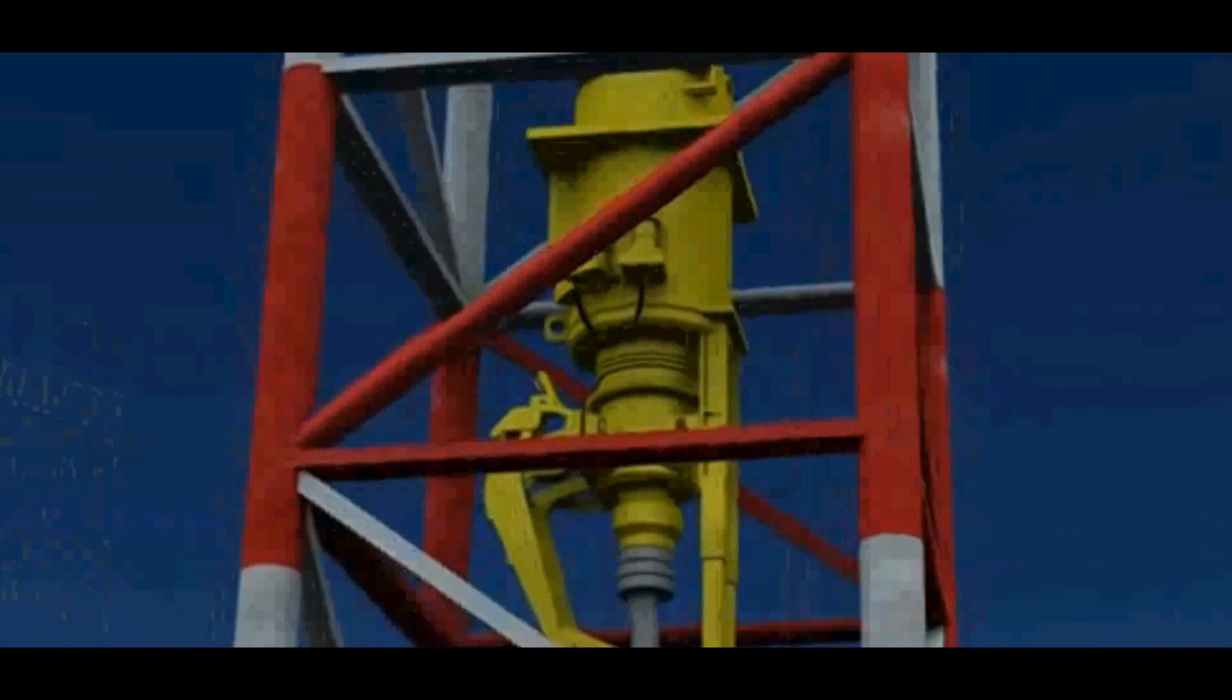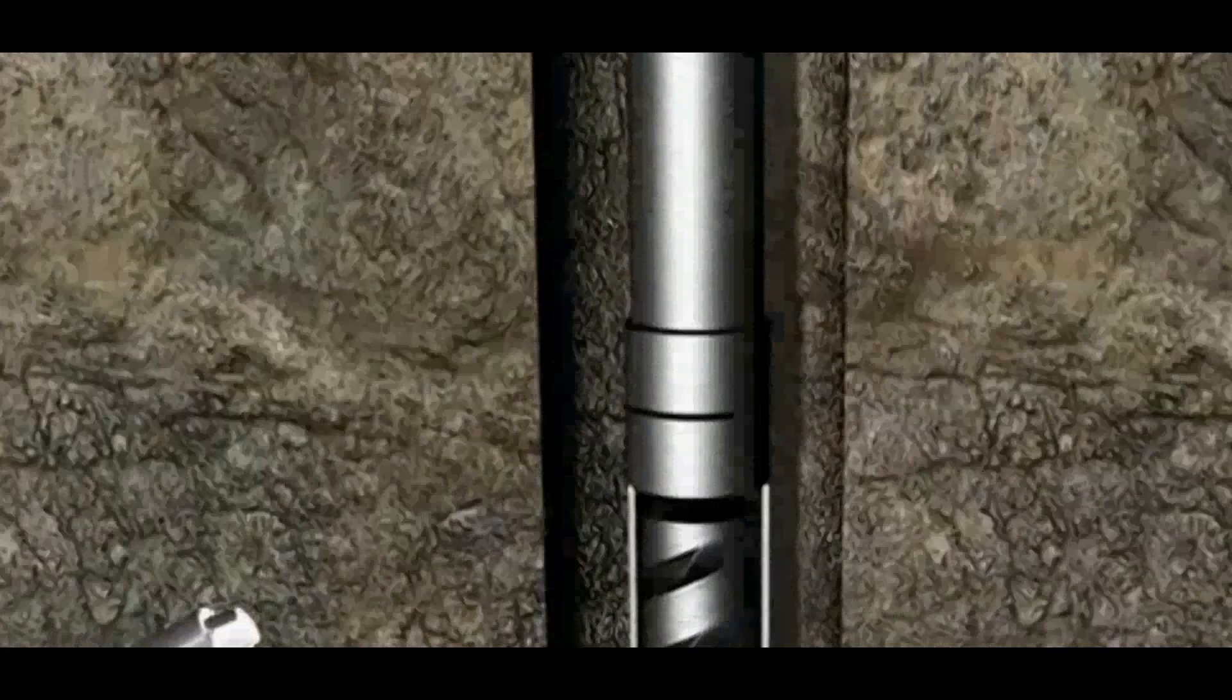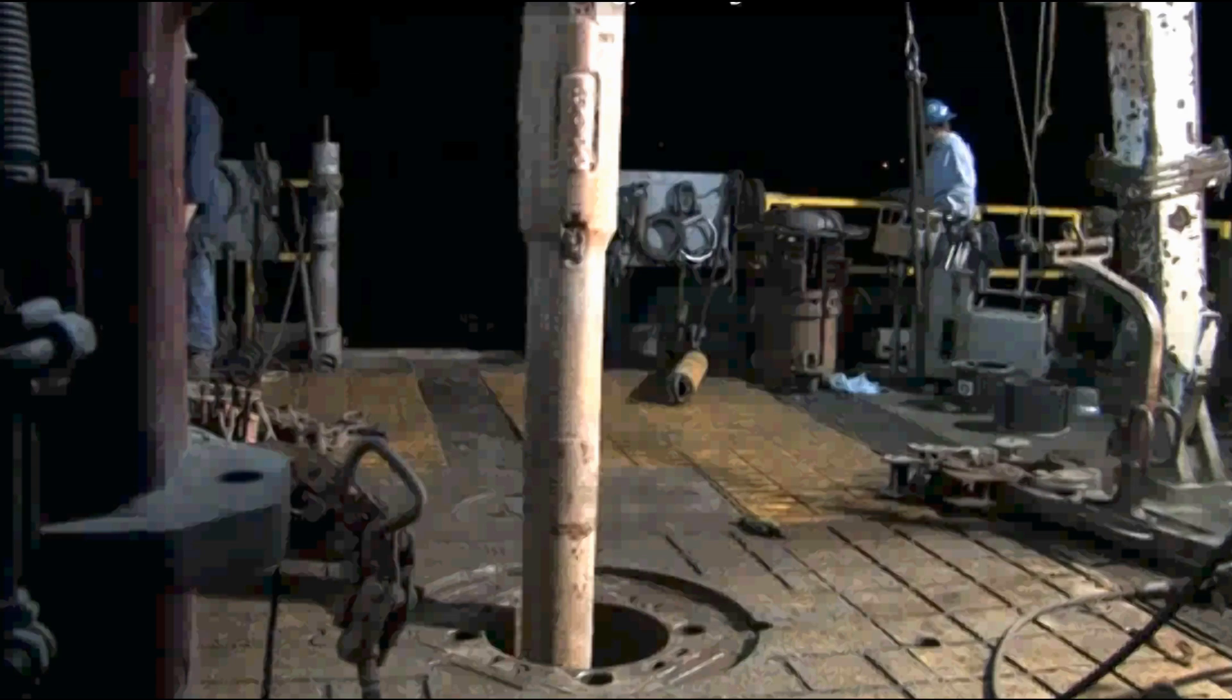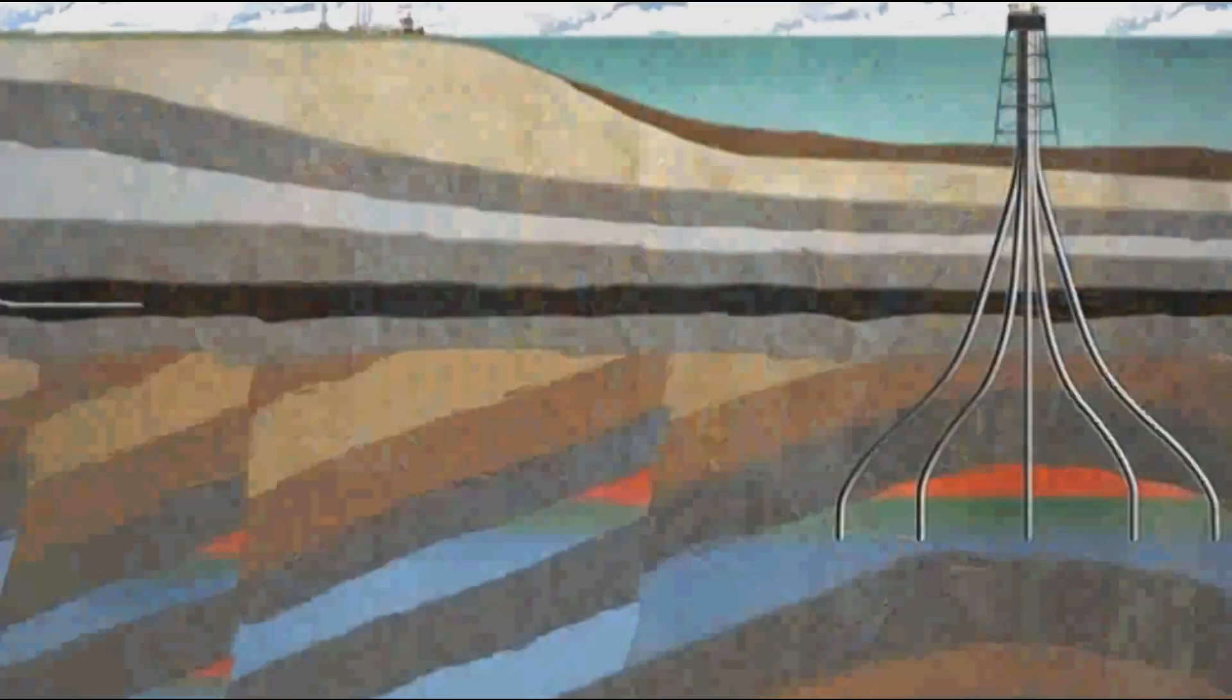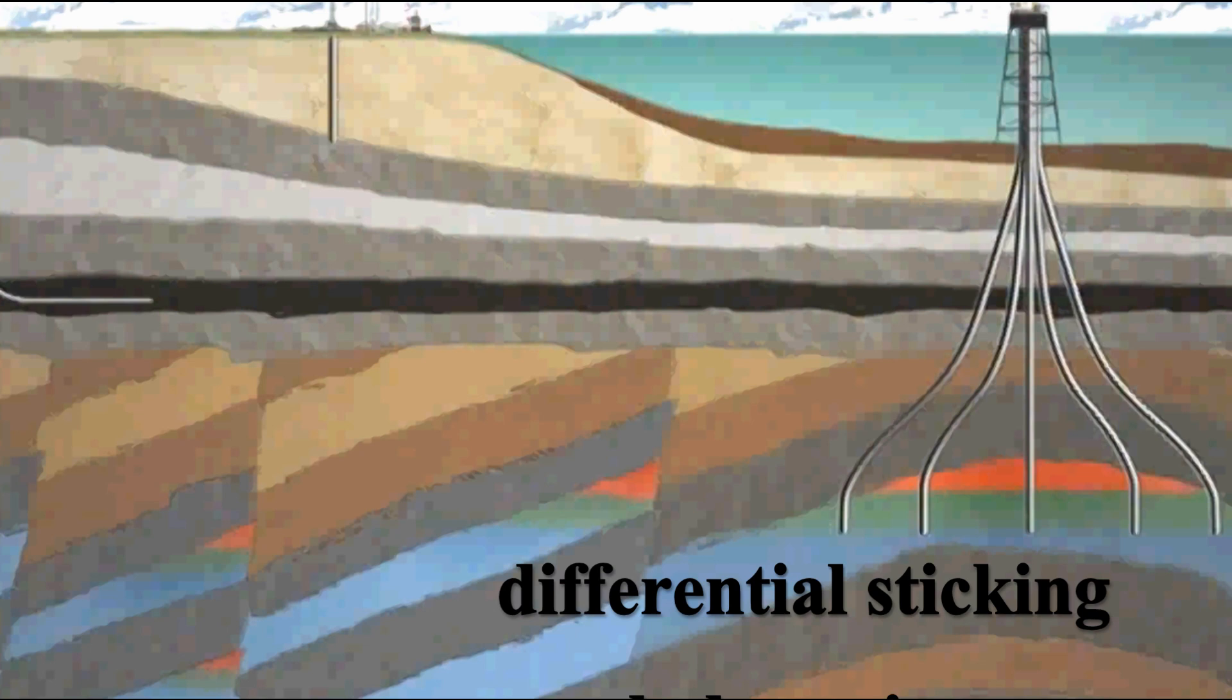Regardless of the experience and careful planning that have gone into drilling a well, things can still go wrong. Other less dramatic events can also occur that can impede progress. They include differential sticking, hole caving, twist-offs, fishing, and lost circulation. Let me explain each of these in more detail.